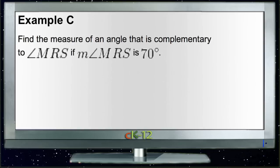Let's take one look at Example C. Example C says that the measure of an angle that is complementary to MRS is the angle we need to find if MRS is 70 degrees. So we know that some angle is 70 degrees, and we want to find what angle we would add to it to get a total of 90 degrees.